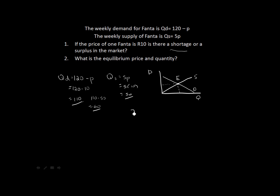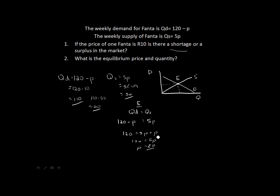Equilibrium is where quantity demanded equals quantity supplied. We have both functions, so we simply set them equal to each other: 120 minus P equals 5P. Rearranging, 120 equals 5P plus P, which gives 120 equals 6P, and therefore our equilibrium price equals 20.